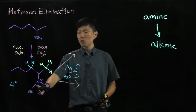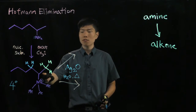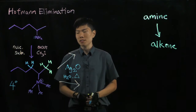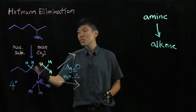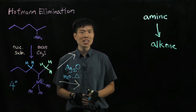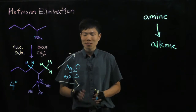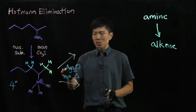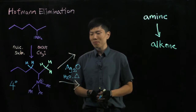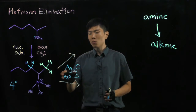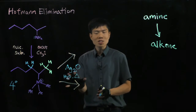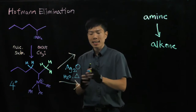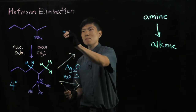As you can see here, we have N-plus with four bonds around it. Now the subsequent step is very interesting. We'll be adding silver oxide in the presence of water and some heat, and this whole entity acts as a base.